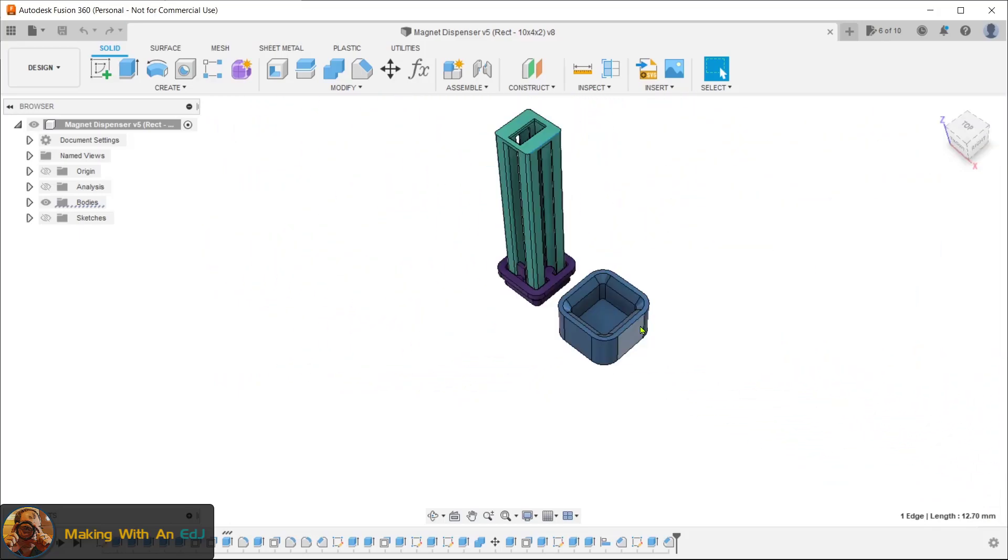And then the Persuader here. I've dubbed him the Persuader because he's going to help act as a tool to break loose the slider, which is going to go up and down, which I will demonstrate next.